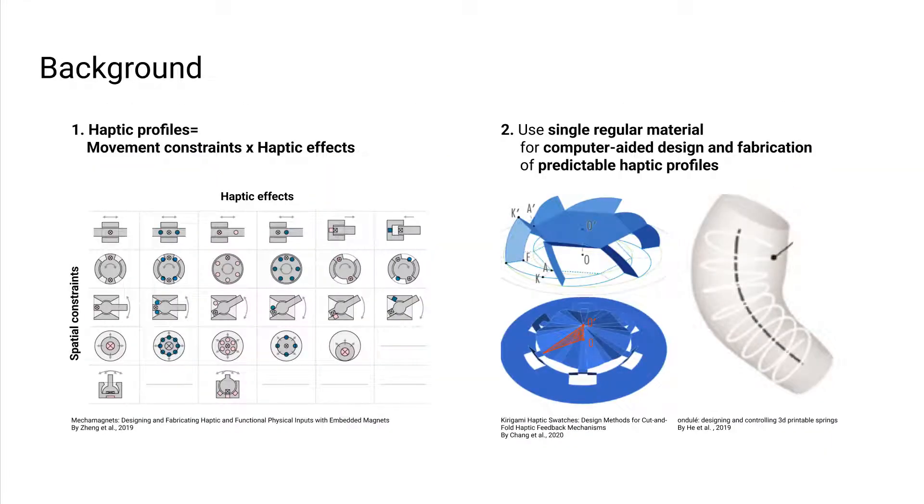Here are two recent developments that we are focusing on. First, designing haptic profiles by configuring haptic effects and movement constraints. For instance, mecha-magnets showed six haptic effects by arranging magnets, and five spatial constraints by applying 3D-printed widgets.